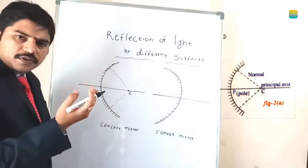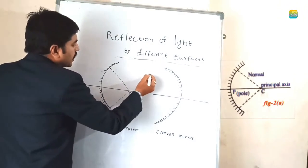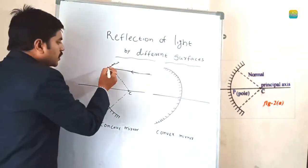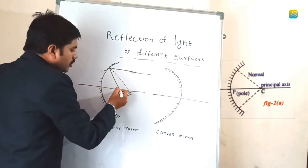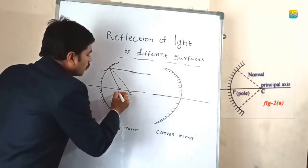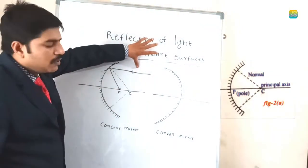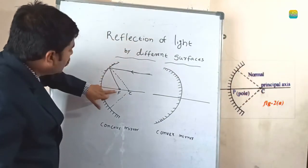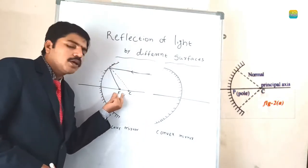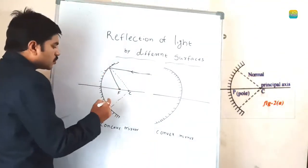If any ray of light is coming from infinity, parallel to the principal axis, then after reflection, the ray will meet at one place on the principal axis. The meeting point on the principal axis is called the focal point, or focus. So if any ray coming from infinity, after reflection, meets on the principal axis — that meeting point is the focal point or focus.